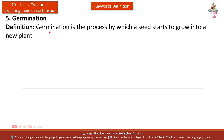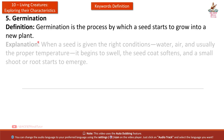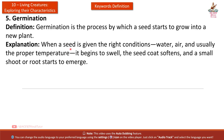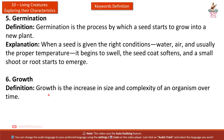Fifth: Germination. Definition: Germination is the process by which a seed starts to grow into a new plant. Explanation: When a seed is given the right conditions — water, air, and usually the proper temperature — it begins to swell, the seed coat softens, and a small shoot or root starts to emerge.